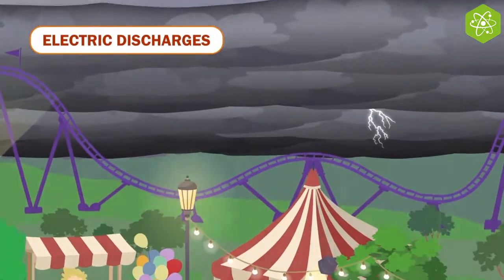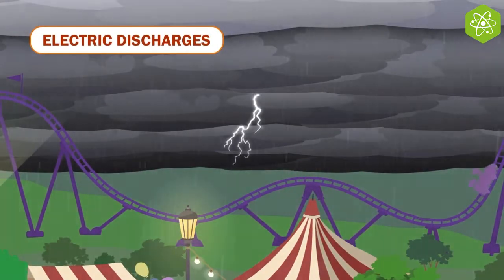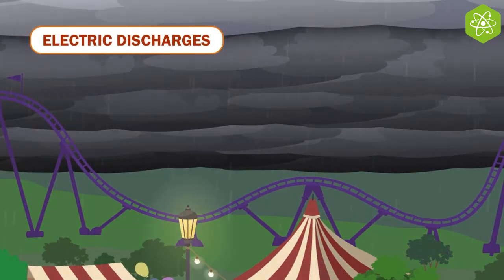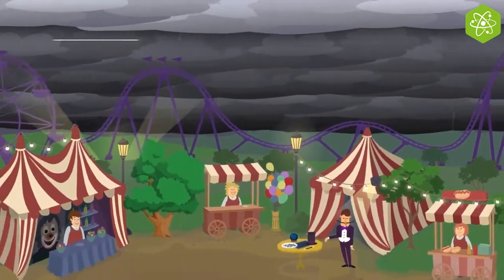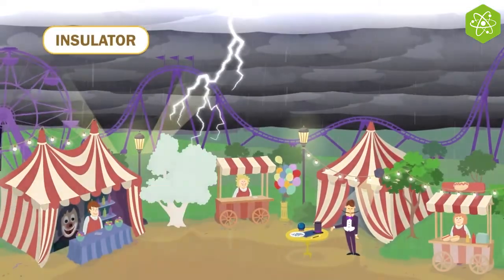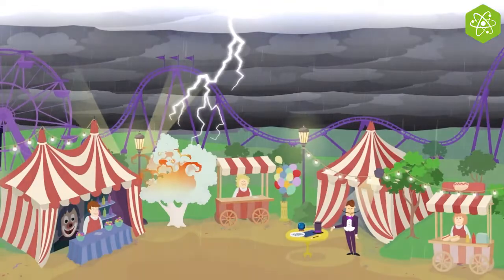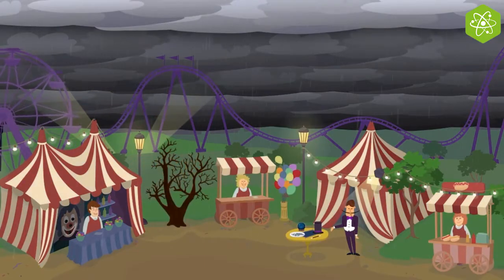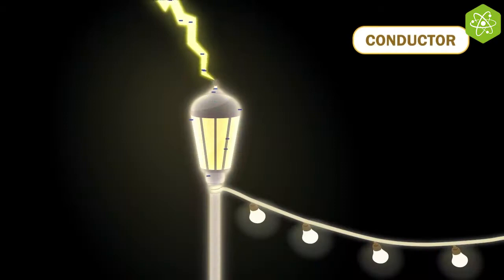Electric discharges can also occur at a distance, especially if the difference between the charges is very large. Insulators are materials that prevent the flow of electrical charges. In contrast, conductors are materials that allow charges to flow through them freely.